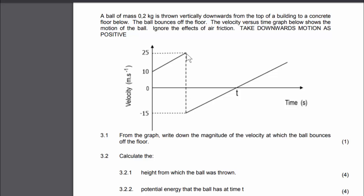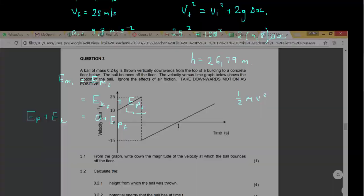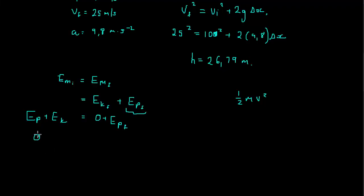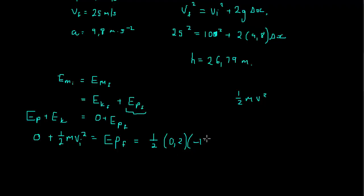The initial potential energy at ground level is zero, so: potential energy at time t = initial kinetic energy = ½mv². With mass 0.2 kg and initial velocity −15 m/s (upwards after bounce): EP = ½ × 0.2 × (−15)² = 0.1 × 225 = 22.5 joules.